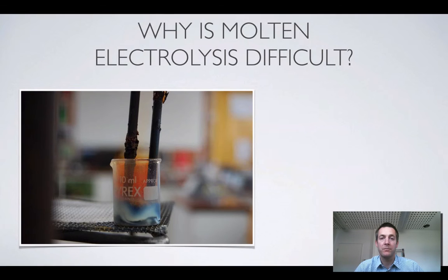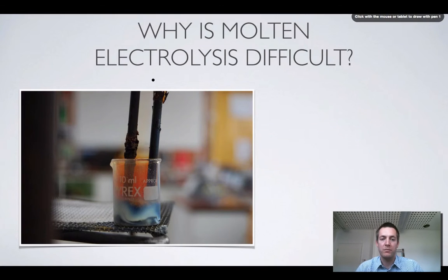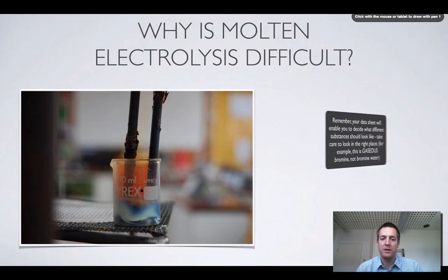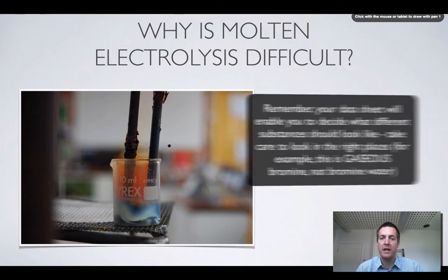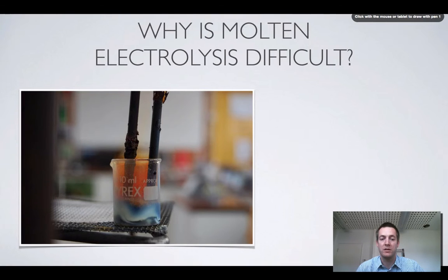So why is it a difficult process to carry out on a practical level? Well, because most ionic substances have very, very high melting points. Here we've got a photograph of what I presume is the electrolysis of lead bromide. There are red vapors above the melt, so maybe some bromine is forming, and there's a silvery liquid down the bottom which could be any number of metals. Lead bromide has quite a low melting point compared to most ionic substances, and clearly this substance has been melted over a Bunsen flame, which isn't something you'd be able to do with most ionic substances.